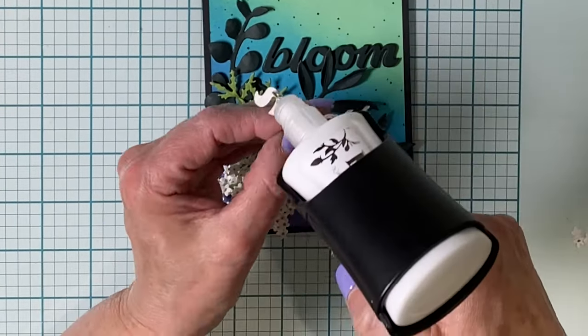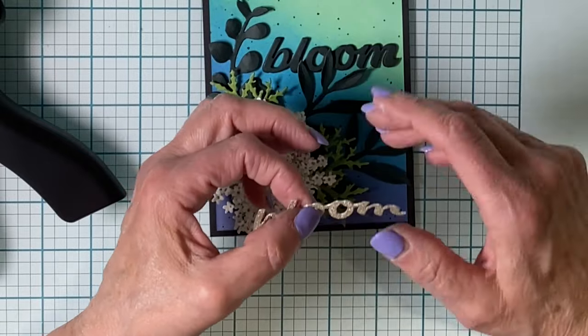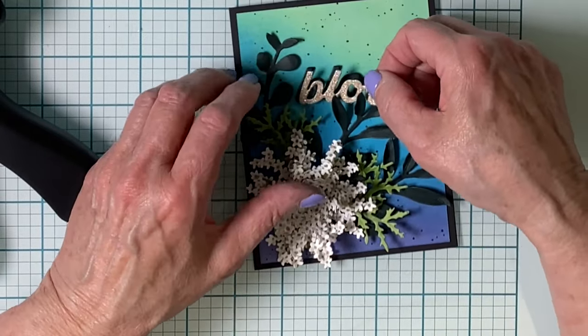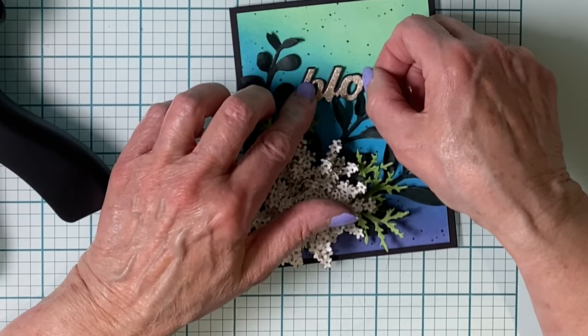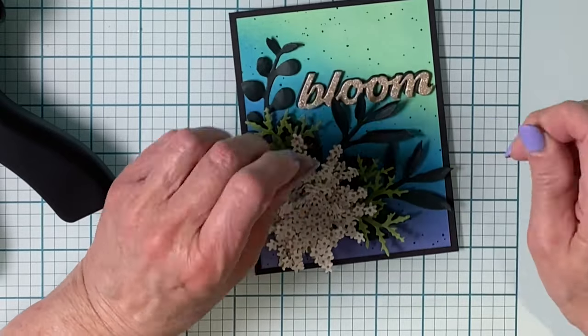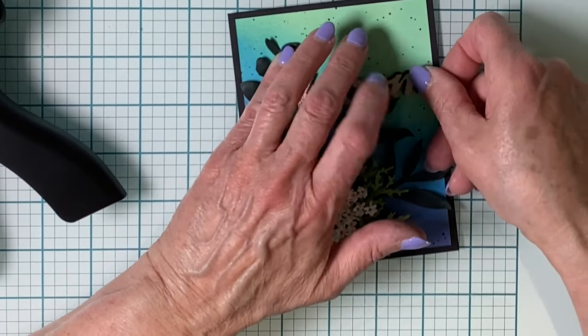And even though the sentiment was foam-backed, I felt that it was getting a little bit lost with those dark leaves. So I die cut it again out of gold glitter cardstock and I'm offsetting it onto the sentiment.